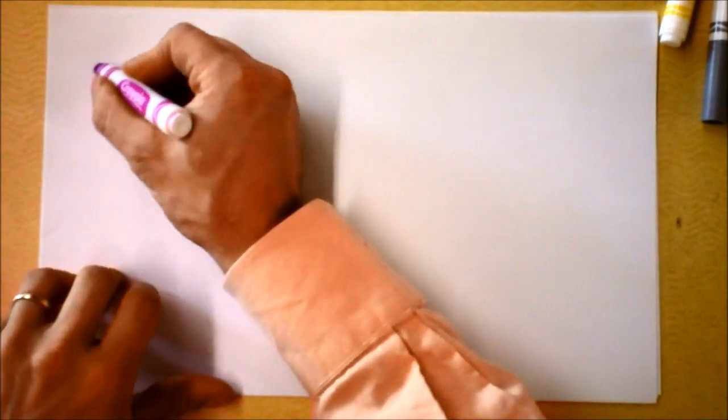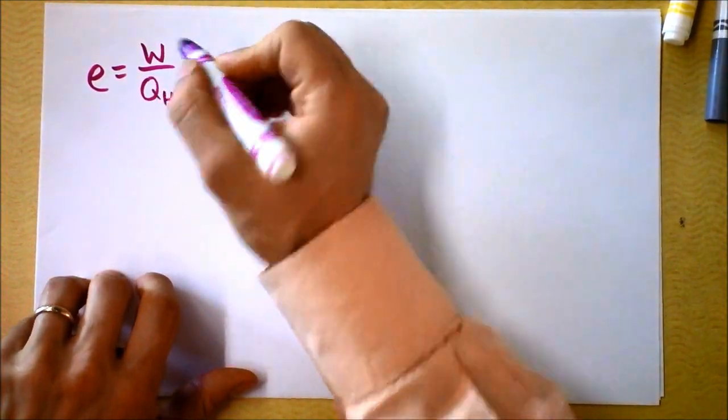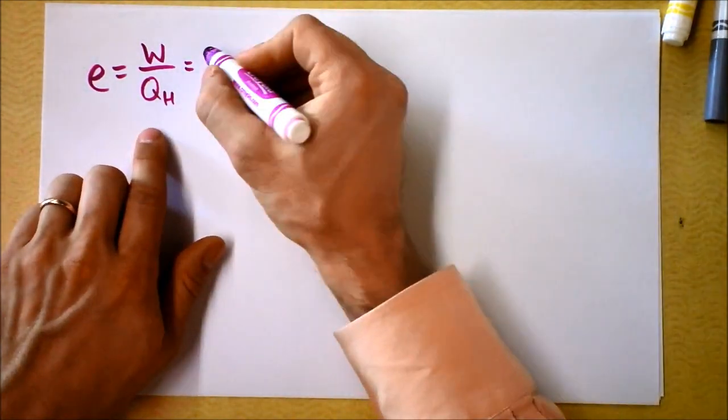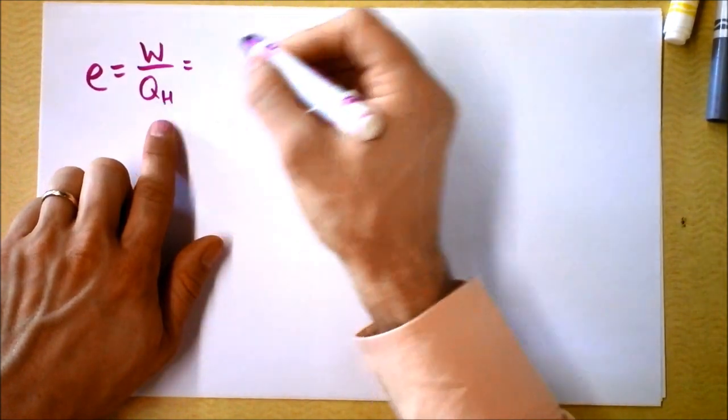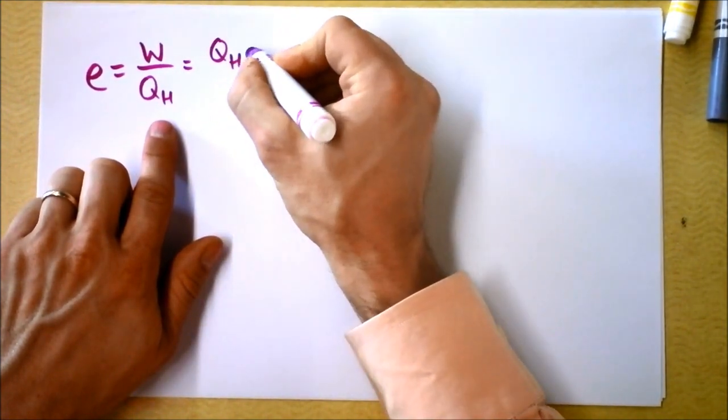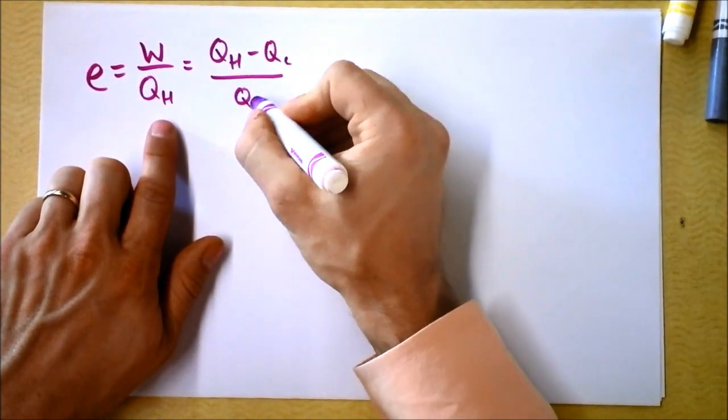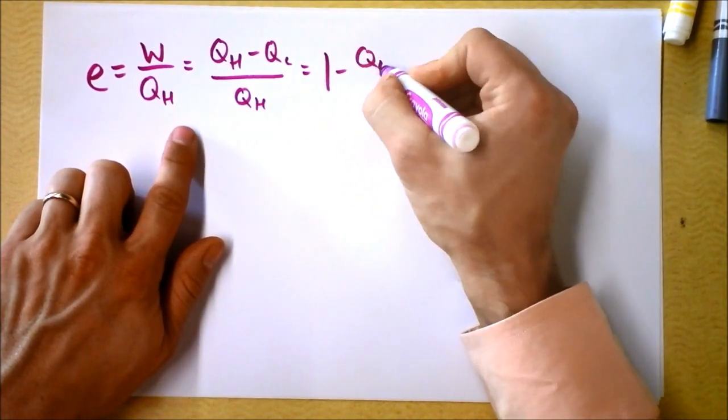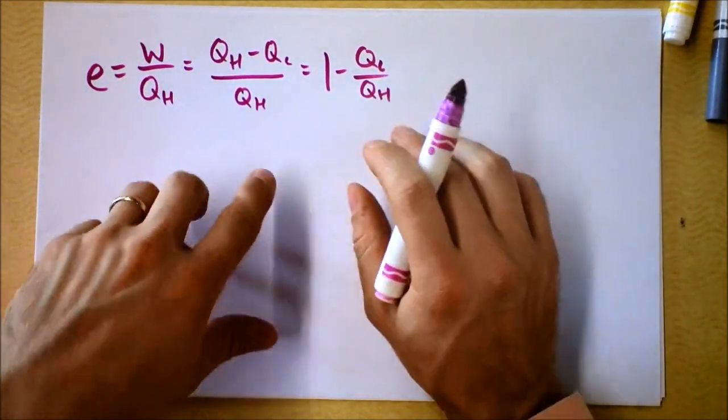The next thing that we can do is examine this efficiency a little bit more. Efficiency, we said, is work over QH. And I'm going to plug in our equation for work. It's going to be QH minus QC over QH. And that's a lovely thing. The efficiency then is just 1 minus QC over QH. This is an equation we'll expect you to have memorized on the AP test.